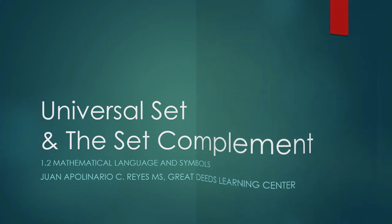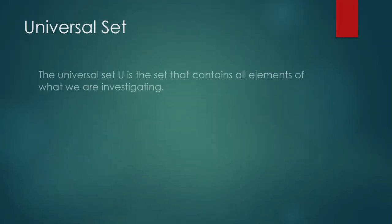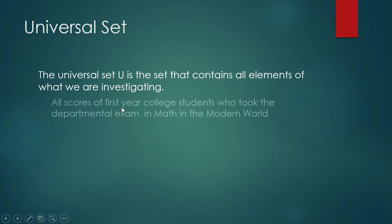The universal set — our notation or symbol for it — is the set that contains all elements of what we are investigating. For example, your midterm exam is a departmental examination; everybody taking Math in the Modern World will take the same exam. As a member of the faculty, I am concerned about the performance of students coming from different colleges and from different sections.